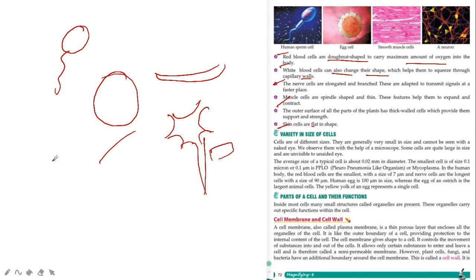Now what about variety in size of cells? Cells are of different sizes. They are generally very small in size and cannot be seen with naked eyes. Naked means open eyes. But we cannot see the cell with naked eyes, so we see it under the microscope. Some cells are quite large in size and visible to the unaided eye. Next part, the average size of typical cell is about 0.2 mm in diameter.